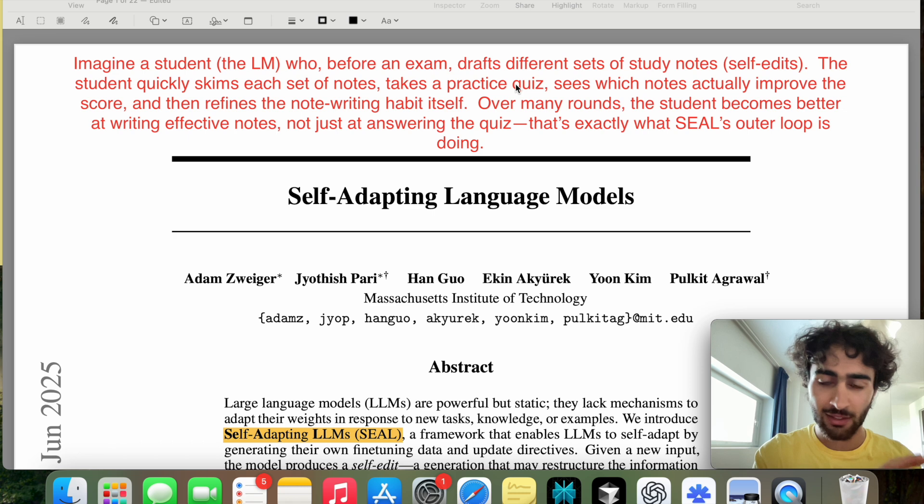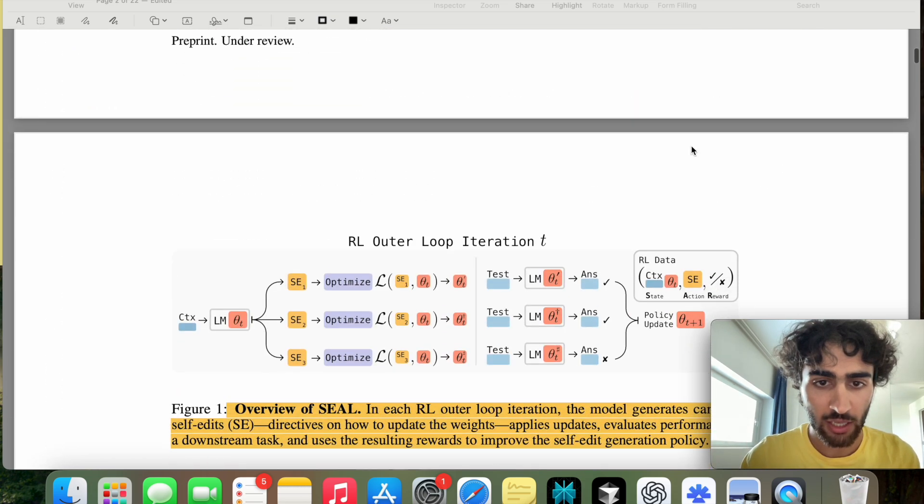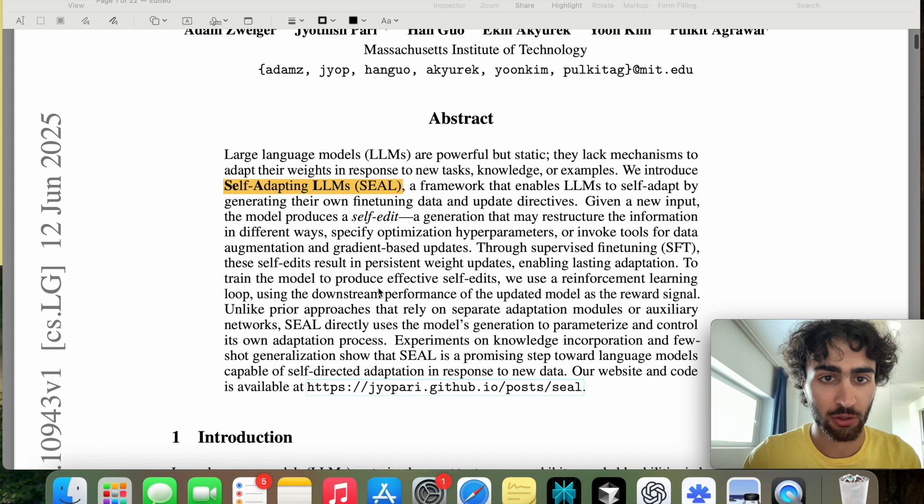And then this is how you test the ability for the given study note to improve your mark, so which notes actually improve the score, and then refines the note-writing habit itself, which is to say that by drafting different sets of study notes in a better way, we can improve our practice quiz score. And over many rounds, the student becomes better at writing effective notes, not just at answering the quiz. And that's what SEAL's outer loop is doing, which is the main mechanism of the algorithm, which actually is right here. So in three seconds, you'll learn what that means.